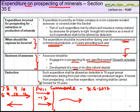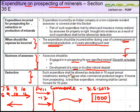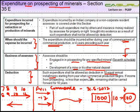The deduction is allowed in 10 equal installments. So if the expenditure incurred is 1,000, dividing by 10 gives a deduction of 100 rupees per year, starting from the year when commercial production begins — in this example, financial year 2011-12.